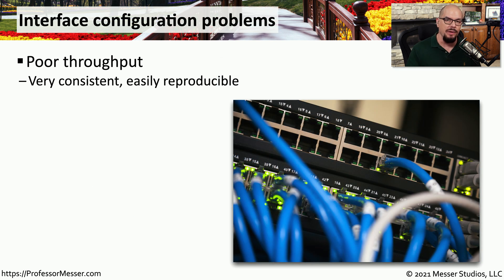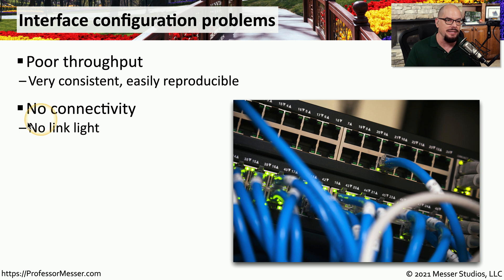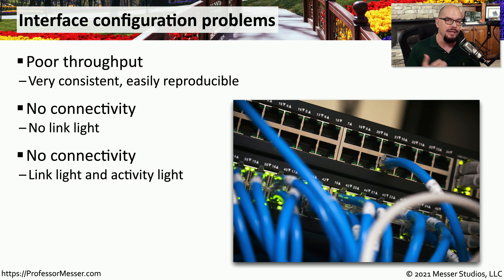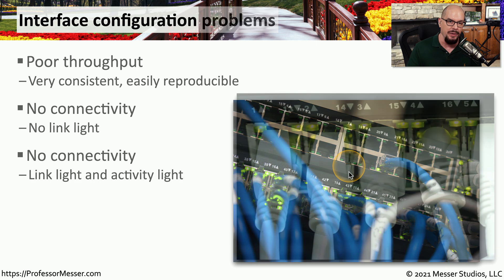If you verify that the cable is wired correctly but you're still not able to get very good throughput, you may have an interface configuration problem. You need to look at the duplex and the speed and make sure they match on both sides. A mismatch may cause no connectivity at all — no link light and no ability to transfer data — or you may have a link light and activity lights but still no connectivity, in which case you may have a configuration issue with the VLAN or some other switch setting.